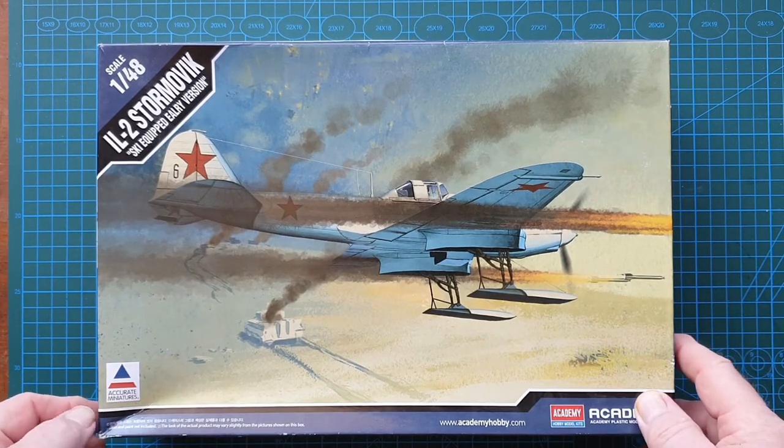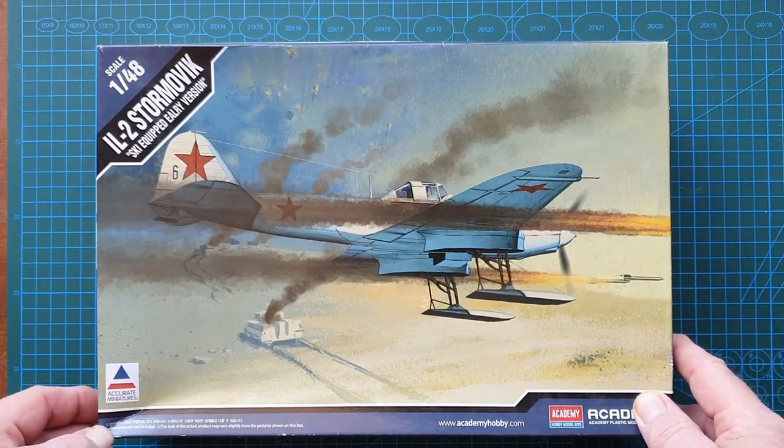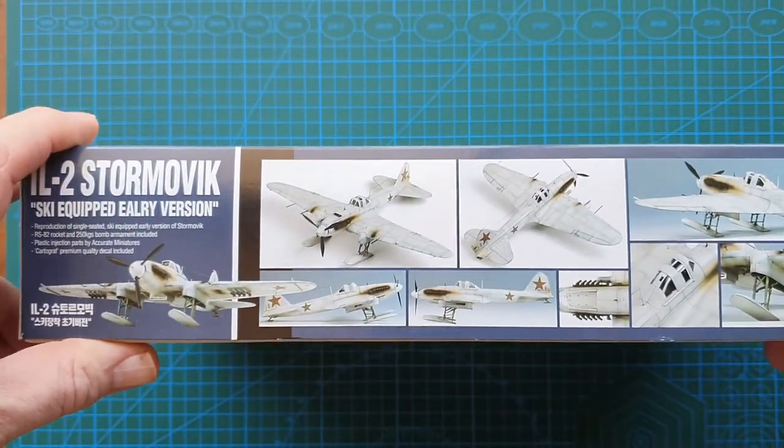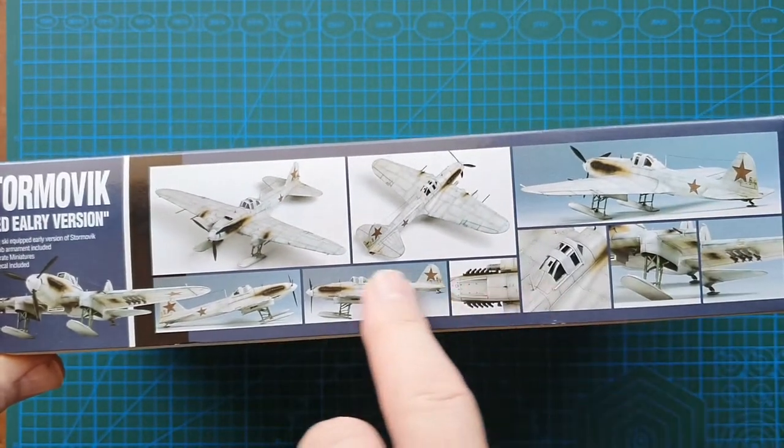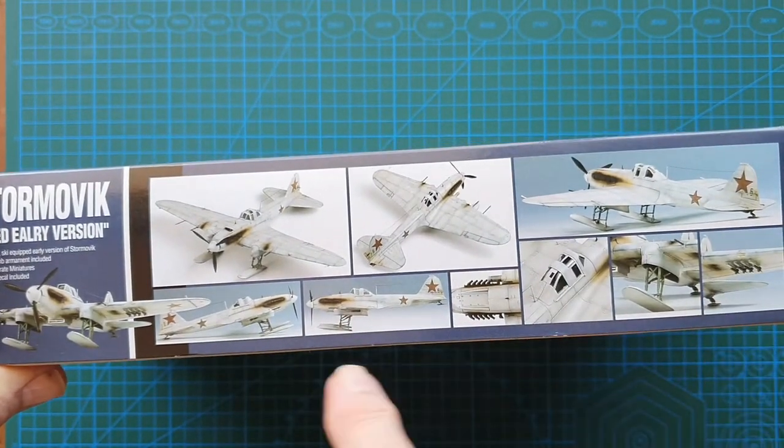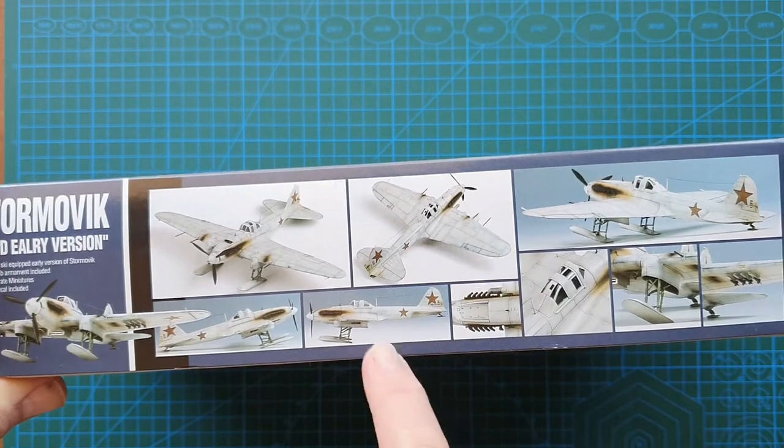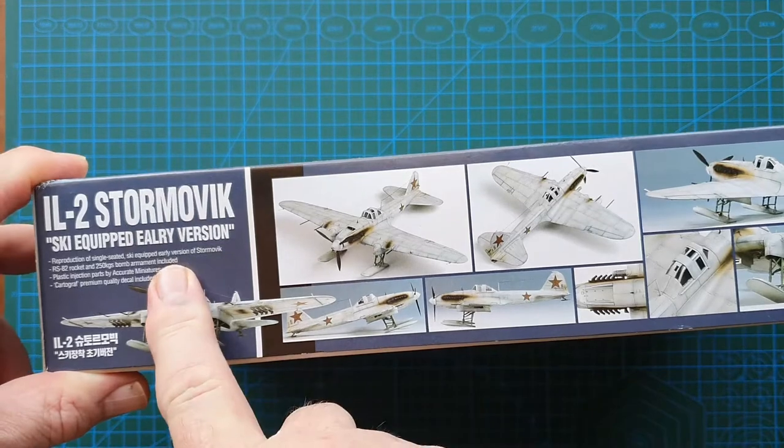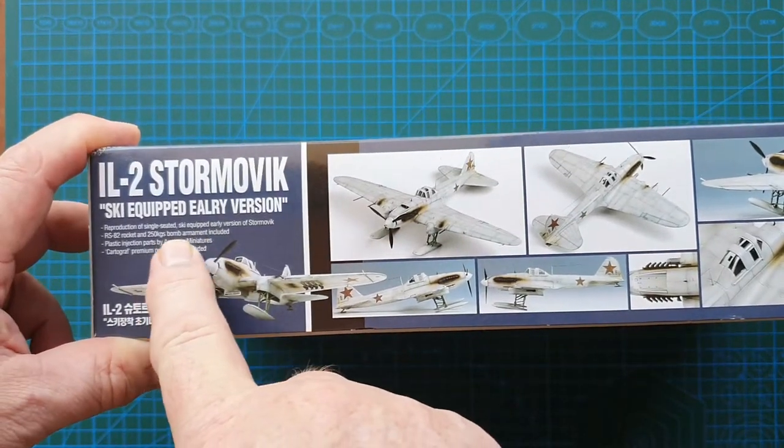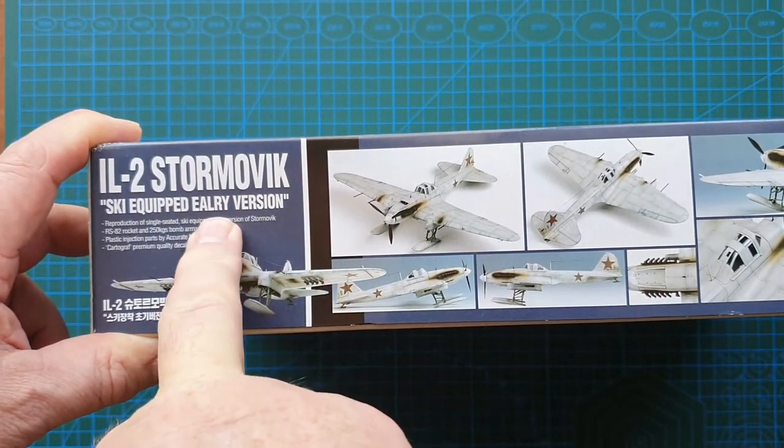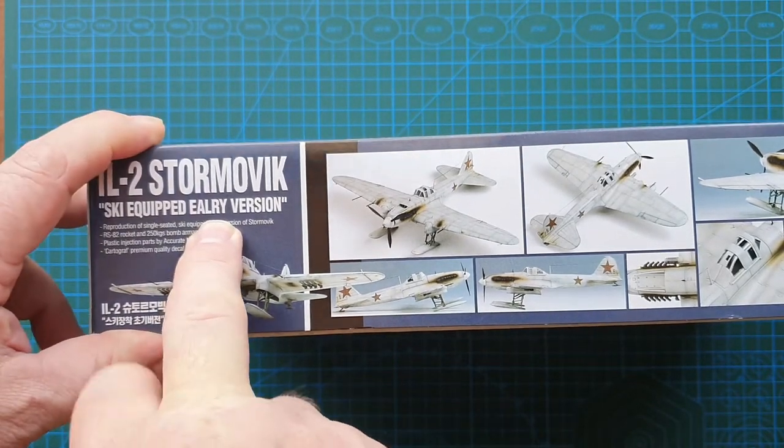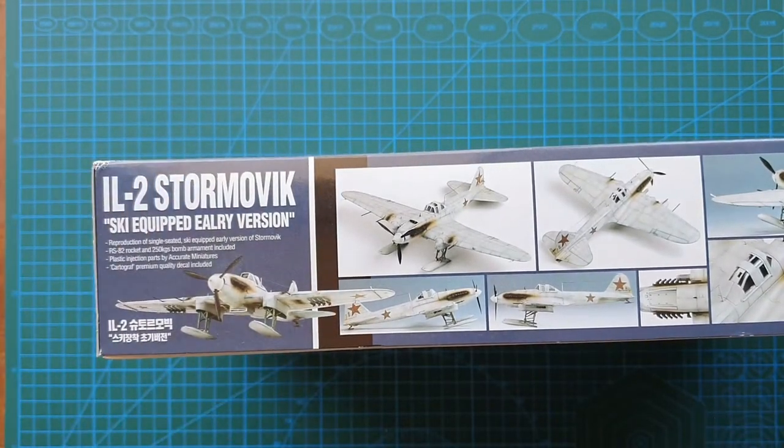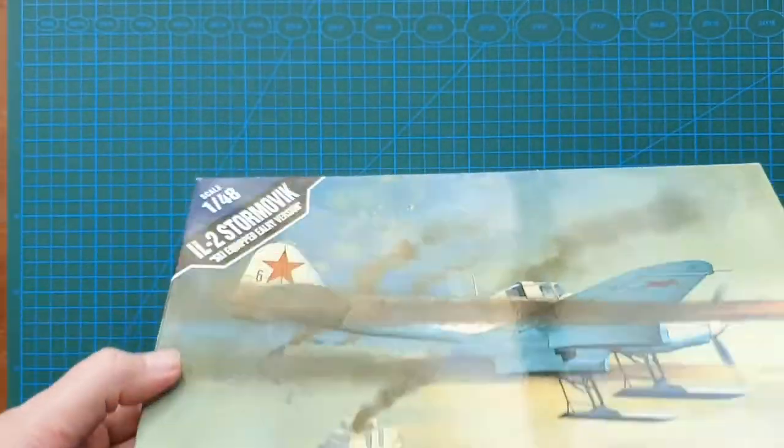On the side you've got photos of the actual model itself made up, painted and weathered. They misspelled 'early'—must be the Russian way of spelling, and they even misspelled it on the top as well.